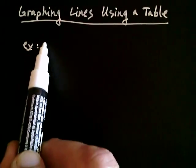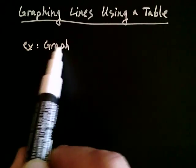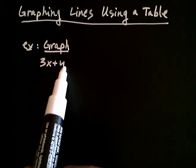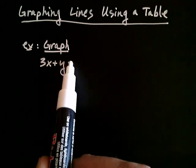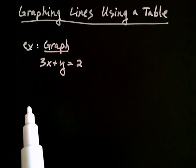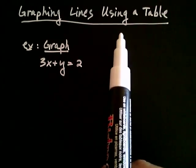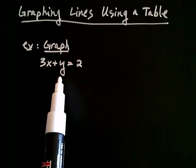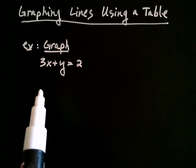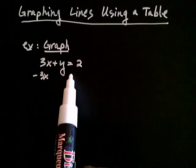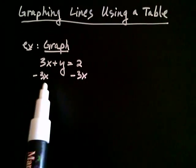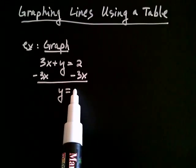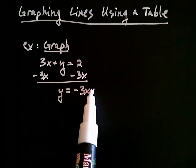Let's say that we wanted to graph 3x + y = 2. When we graph using a table, we're going to start by isolating the y in the equation. We're going to subtract 3x from both sides. On the left it's going to be y, and on the right we're going to write this as -3x + 2.